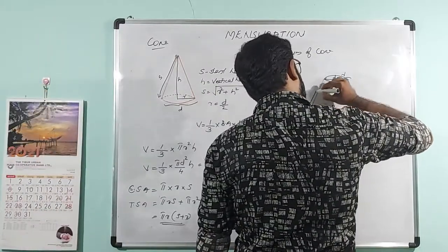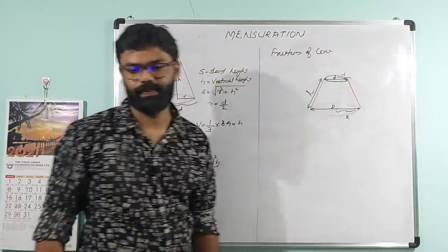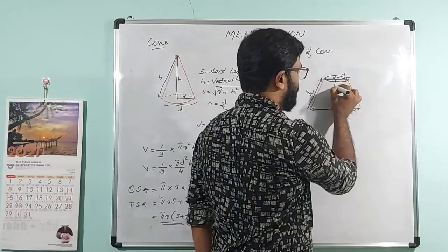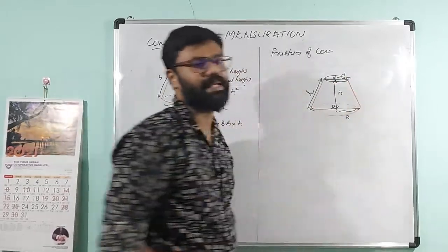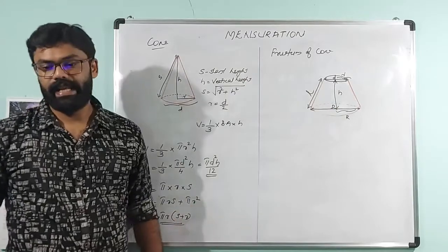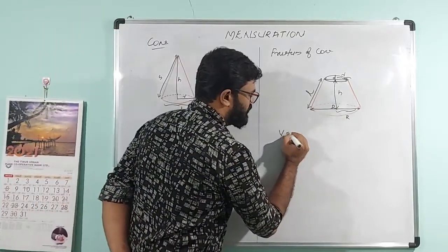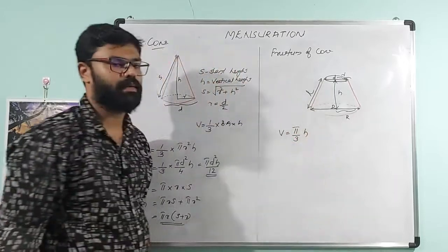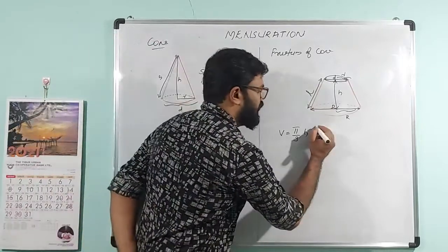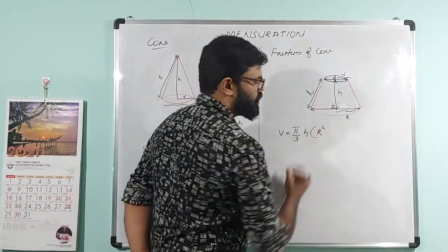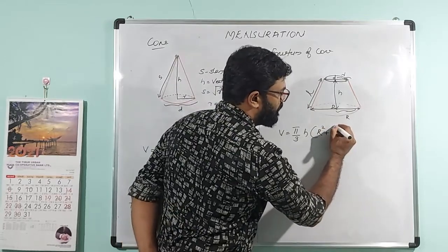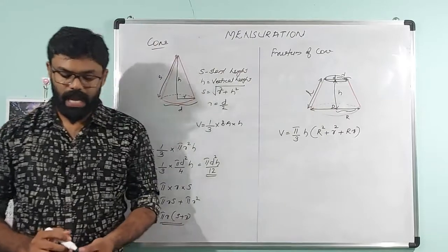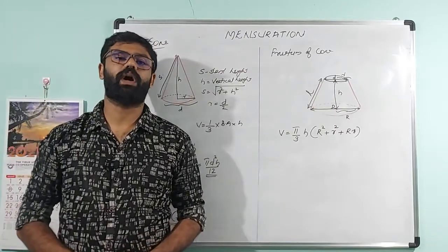The frustum of cone volume equation: V is equal to π by 3 into H (vertical height) into (R² + r² + R·r), where R is the bottom radius and r is the top radius.